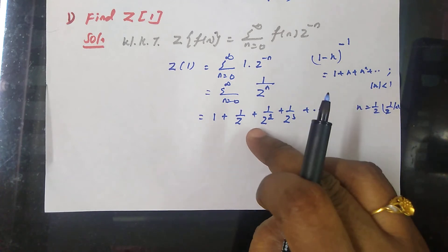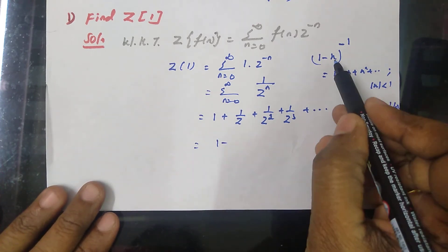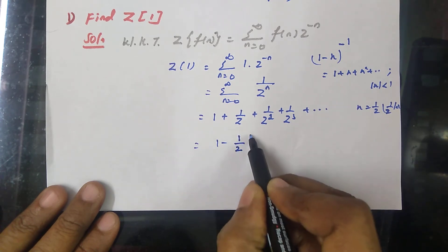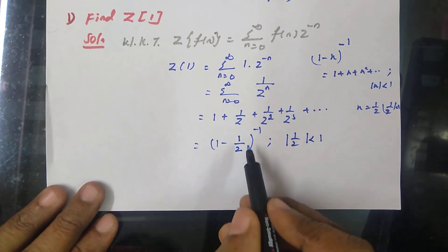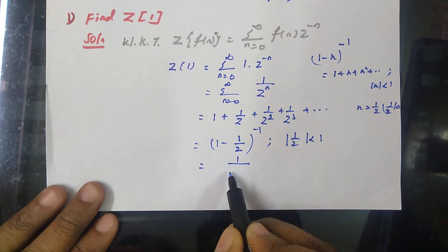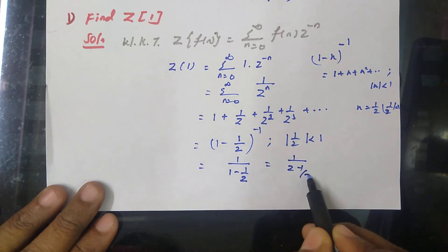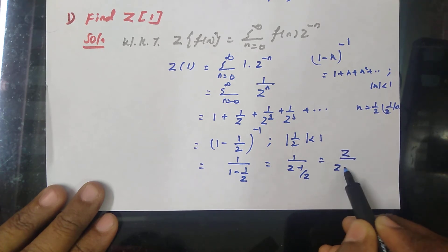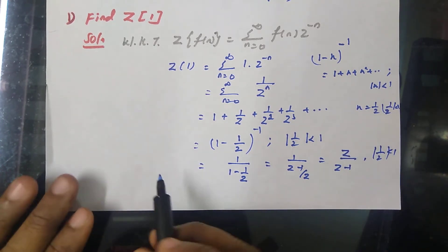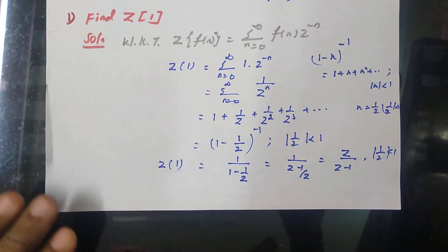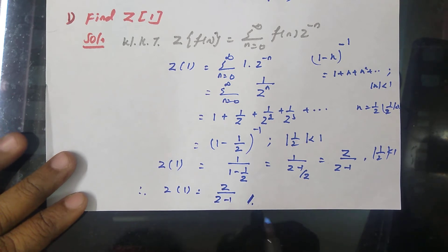So instead of the series 1 plus 1 by Z plus 1 by Z squared etc., we apply the formula with x equal to 1 by Z: this becomes 1 minus 1 by Z to the power minus 1, which equals 1 by 1 minus 1 by Z, which simplifies to Z by Z minus 1, such that mod of 1 by Z is less than 1. Therefore, the Z transform of 1 is equal to Z by Z minus 1. This is the required answer.